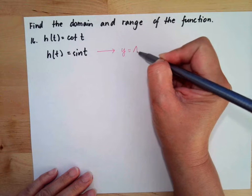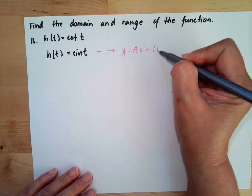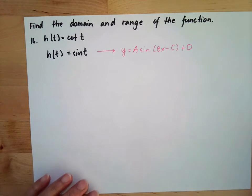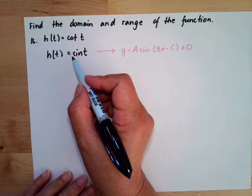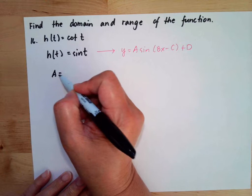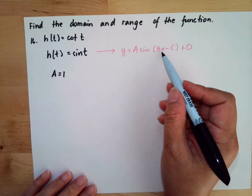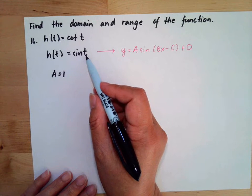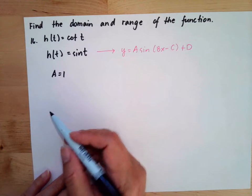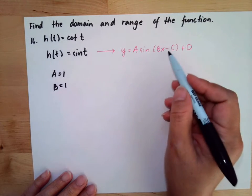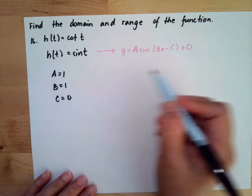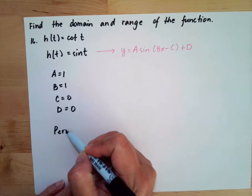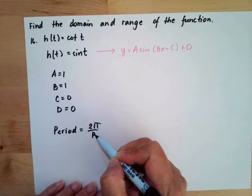We have the general equation y = a·sine(bx − c) + d, where a is the amplitude. Here there's no number shown, so a is an implied 1. The b is the coefficient of the variable. Our variable is t and there's no number, so b is equal to 1. There is no horizontal or vertical displacement.